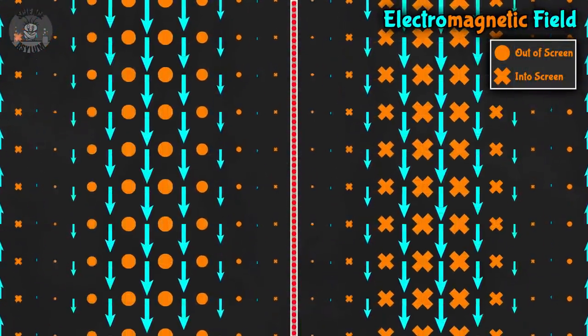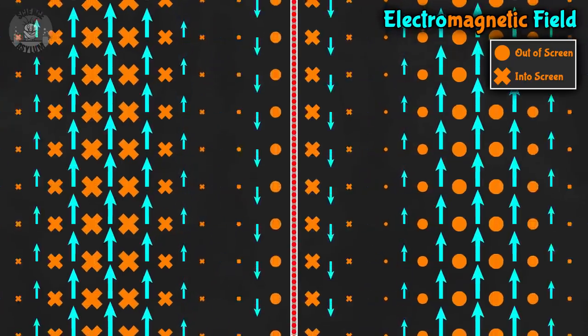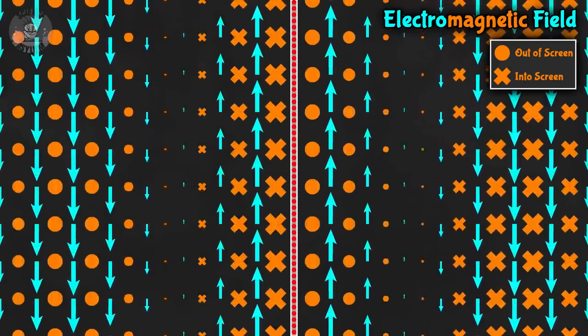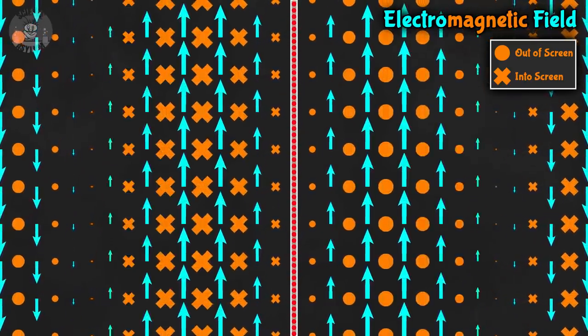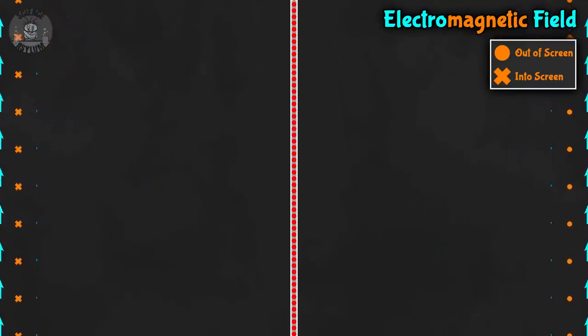Math aside, let's just stop and appreciate something for a few seconds. This field disturbance is self-sustaining. You can stop the charge from moving and the fields will continue to do this. There's now a disturbance in a couple of fields that travels out through space, all because some charge accelerated at some point in the past. And that field disturbance is what we call light.